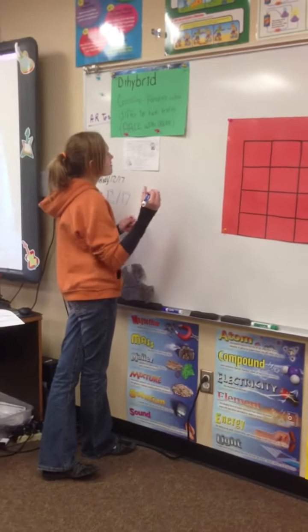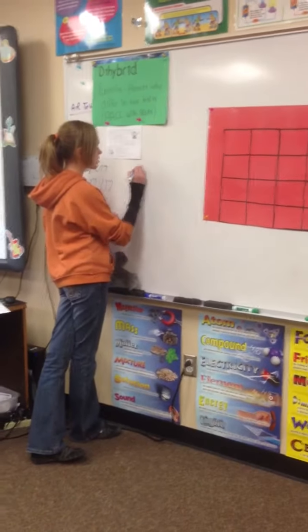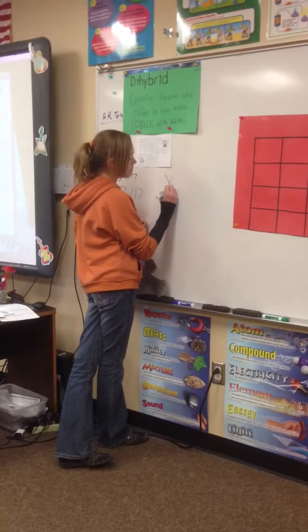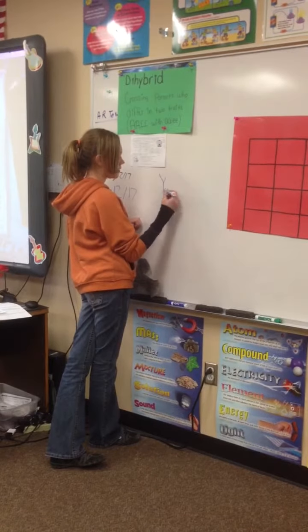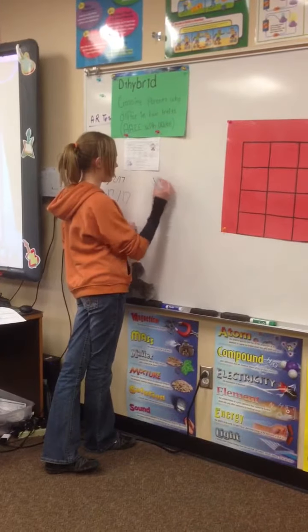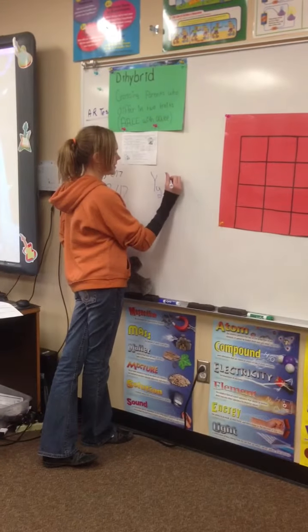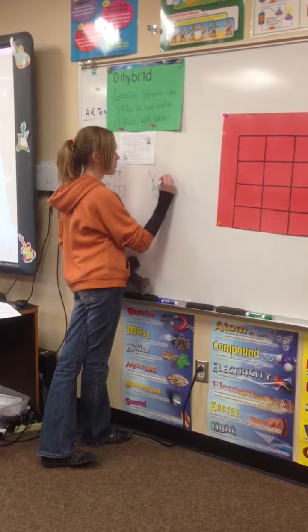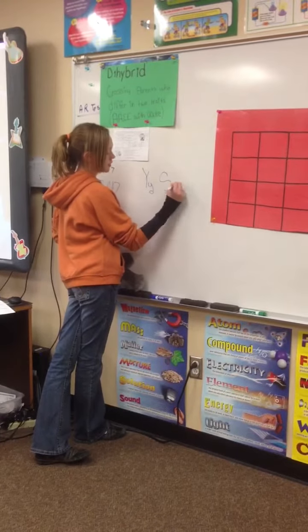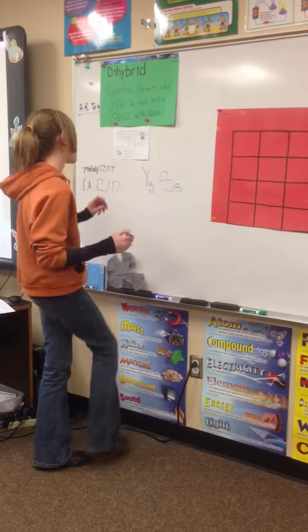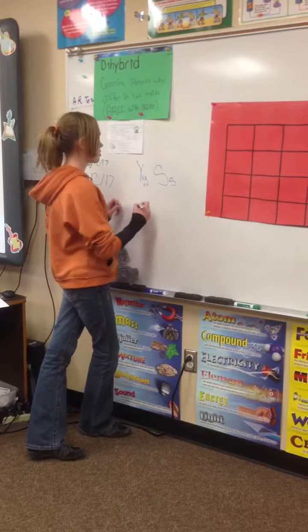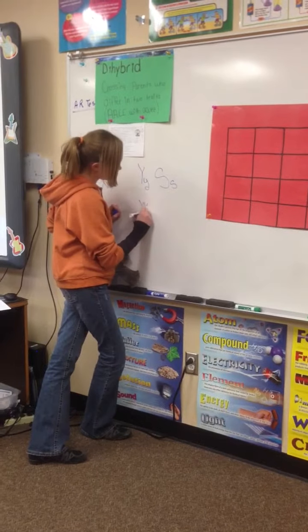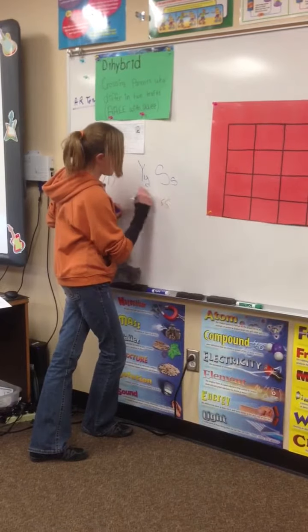Since SpongeBob is heterozygous for both his traits, he's going to have a big Y and a little y. Heterozygous is different - this is his yellow body trait. And he's heterozygous for his square pants, so it's big S, little s. And SpongeSusie is recessive for both of her traits, so it's little y, little y, and little s, little s.